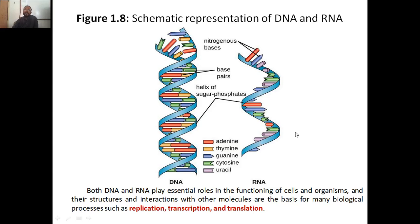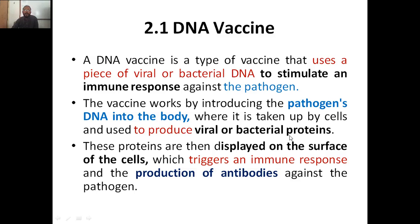This diagram shows DNA as a double strand and RNA as a single strand, with the base pairs visible. We also know the central dogma: from DNA, transcription gives mRNA, and then translation gives protein.